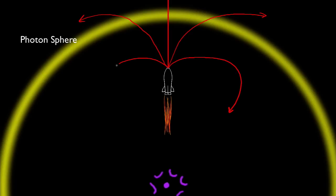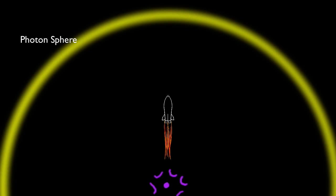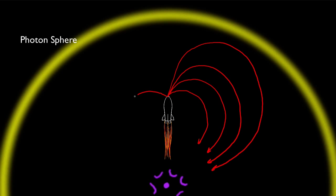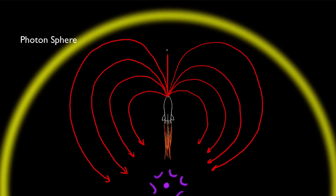The deeper the spaceship descends below the photon sphere, however, the more difficult it becomes to escape. Not only for the astronauts, but for any light beam they may try to send away from the black hole. The farther down they go, the more straight up they would need to point the light for the light to escape.